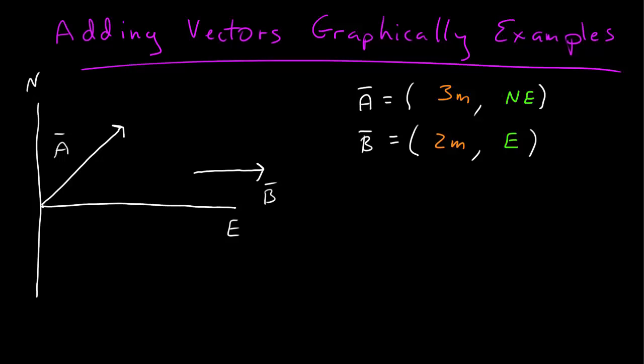Here I'm going to do a couple examples of adding vectors graphically and talk about some problems I see students run into. So I have two vectors A and B. A has a magnitude of 3 meters and it is pointing directly northeast. Vector B has a magnitude of 2 meters and it is pointing directly east and I want to add A plus B.